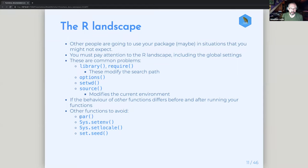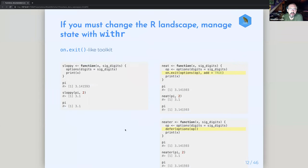Here are some other functions you should try to avoid: parameters, setting the environment, setting location, and setting the seed. If you're doing any of those things while writing a package, stop — basically that's Hadley and Jenny's advice. If you do have to change the landscape, they have a nice package called withr. It's very much like on.exit, which those of us who went through Advanced R will have come to know. It's basically a way of cleaning up after yourself after you've messed with the R landscape.